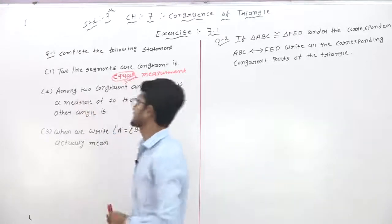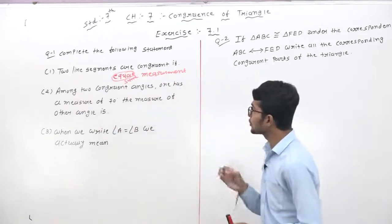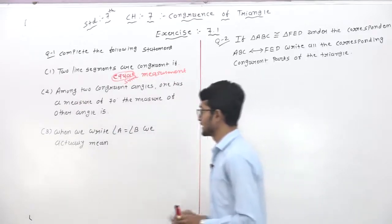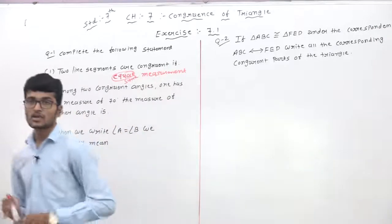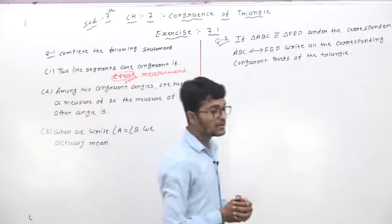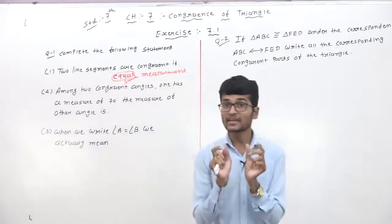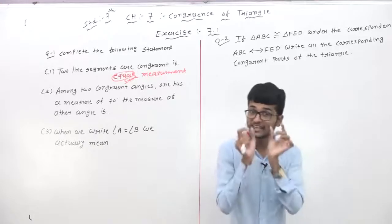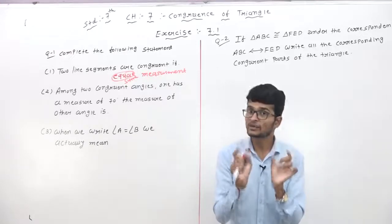Then our second question: among two congruent angles, one has the measure of 70 degrees. What is the measure of the other angle? We have already discussed that if any angles are the same, then and then these two angles are equal.